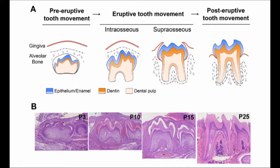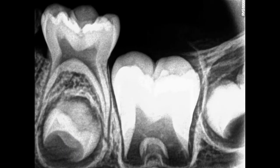Tooth eruption is a very dynamic phenomenon and it is divided into three phases. The first phase is the pre-eruptive tooth movement phase. In this phase, the movements are made within the jaws before the tooth actually begins to erupt — this is an entirely intraosseous phase. In this phase, the permanent premolars occupy a position exactly between the diverging roots of the primary first and second molars.